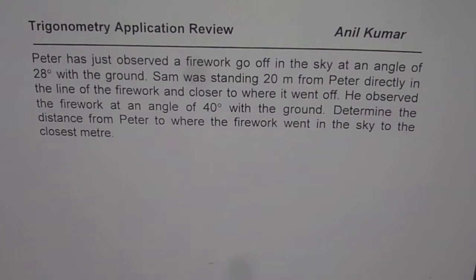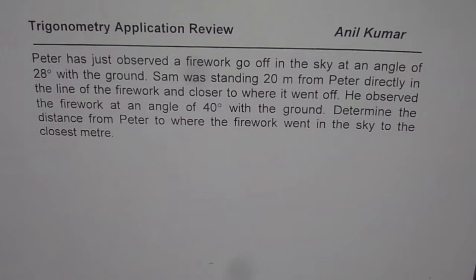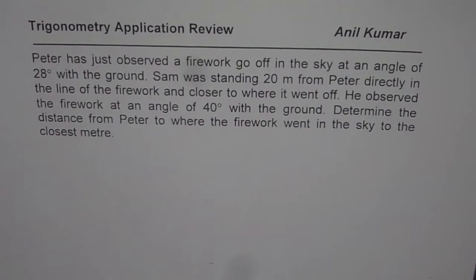The question is: Peter has just observed a firework go off in the sky at an angle of 28 degrees with the ground. Sam was standing 20 meters from Peter, directly in the line of the firework and closer to where it went off. He observed the firework at an angle of elevation of 40 degrees with the ground. Determine the distance from Peter to where the firework went off in the sky, to the closest meter.